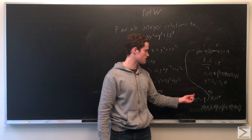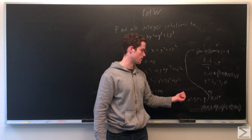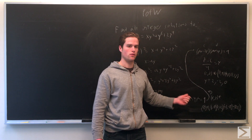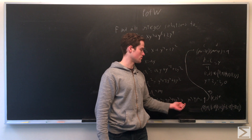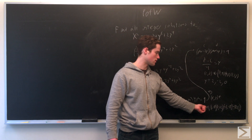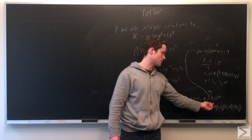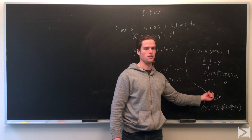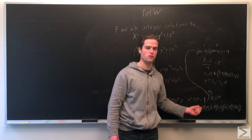So x can equal either minus 8 or 12, or minus 2 or 2. The complete set of integer solutions is: (0, 0), (2, -8), (2, 12), (-2, -8), and (-2, 12).